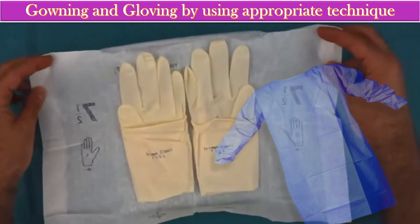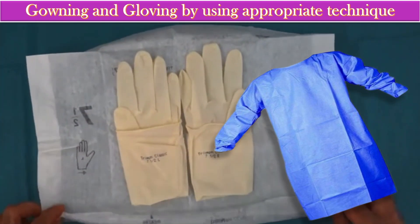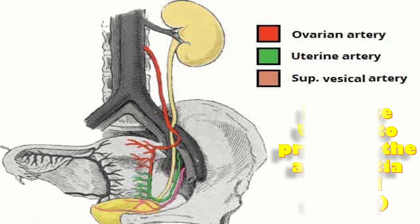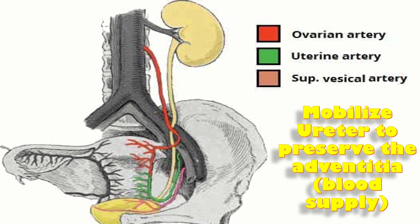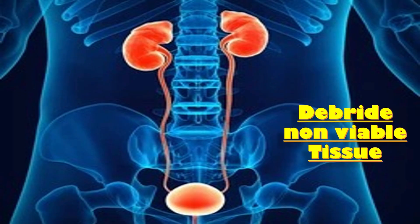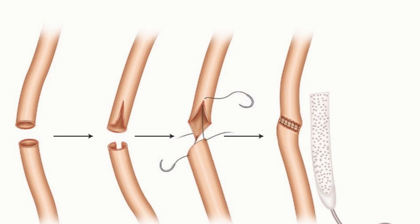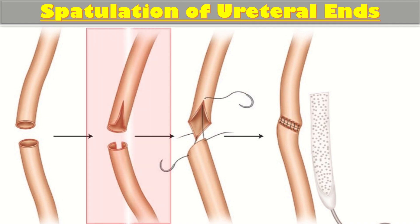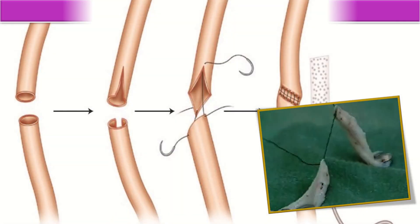Carefully mobilize the ureter to preserve the adventitia and its blood supply. Judiciously debride the non-viable tissue until the edges bleed. Spatulation of the ureteral ends is then performed — each end of the ureter is divided obliquely to increase the size of the lumen to be anastomosed.